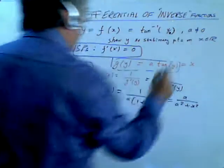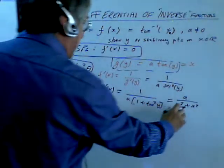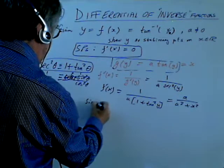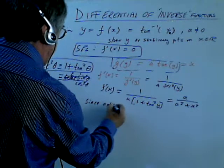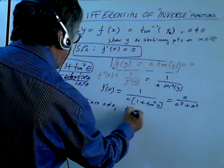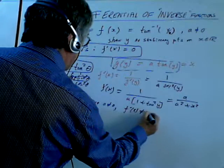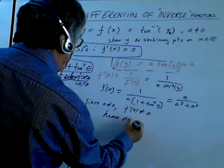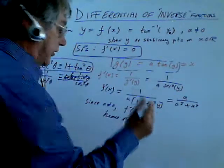Now, a is not equal to 0. So this function will never equal 0. Since a is not equal to 0, f'(x) will never equal 0. Hence, there's no critical points.